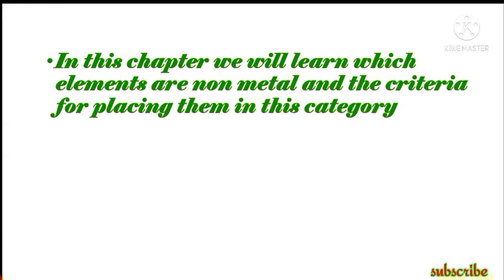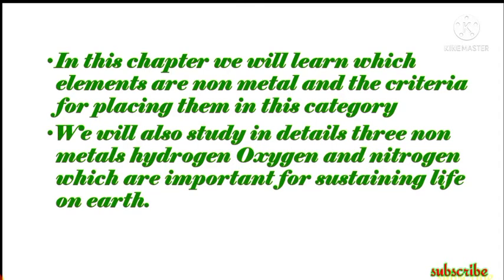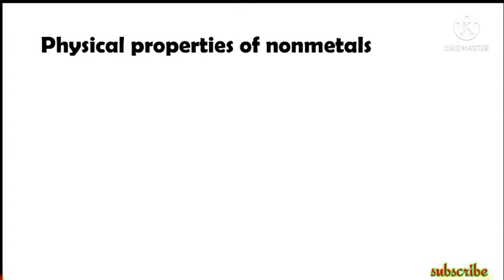In this chapter we will learn which elements are nonmetals and the criteria for placing them as nonmetals — that is, what properties make us call them nonmetals. We will also study in detail three nonmetals — hydrogen, oxygen, and nitrogen — which are important for sustaining life on earth. So there will be generalized information about all nonmetals and specific study of hydrogen, oxygen, and nitrogen.